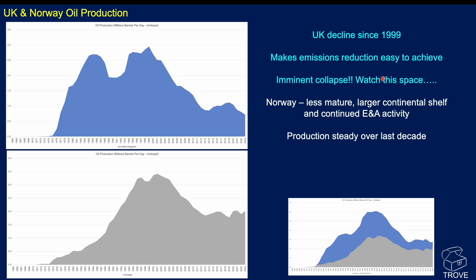UK and Norway production: the UK started ramping up in 1975, then there's a massive dip — that's Piper Alpha and the effects of that major disaster. It recovers, and then from around 1998 it's basically been in decline, halted for a while but in recent years there's been a major decline and it's about to collapse. We've warned people this is coming. When it does, our balance of payments is going to suffer badly — we'll have a whole bunch of oil coming in from overseas, because the demand is still there and people still want to run their cars on petrol and diesel.